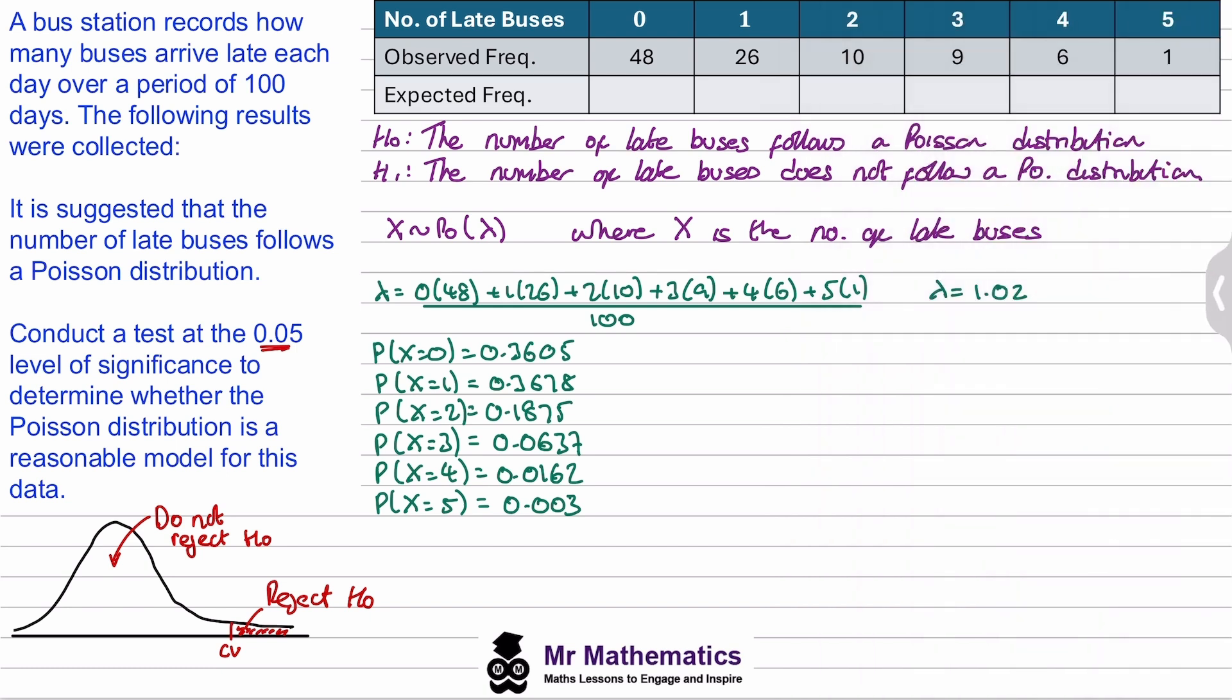So now we've got the probability we can work out the expected frequencies. We've got a 36% chance of x equaling 0 out of a total of 100 days. So if we just multiply this by 100, we'll get the expected frequency of 36.05. For x equals 1, again we'll multiply this by 100 and we get 36.78. For x equals 2, we get 18.75. For x equals 3, 6.37. And then 1.62 and 0.3.